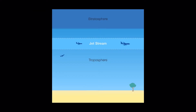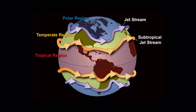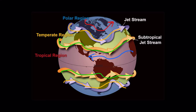These jet streams are located around the height of the tropopause. The main jet streams are the two polar jet streams and the two subtropical jet streams. There is also an arctic jet stream and a tropical easterly jet stream observed in the northern hemisphere. These two jet streams are only observed during certain times of the year, unlike the other jet streams that are observed throughout the year.